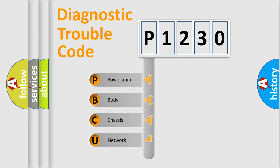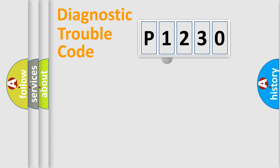We divide the electric system of automobile into four basic units: Powertrain, Body, Chassis, and Network. This distribution is defined in the first character code.